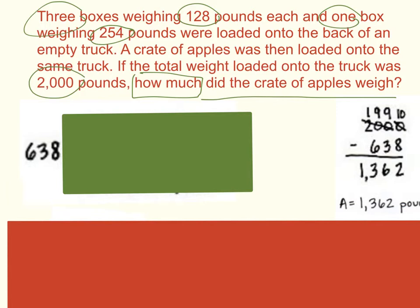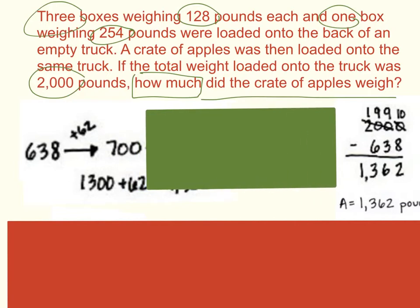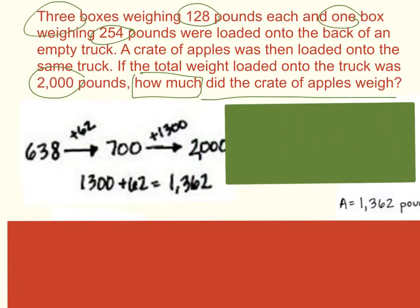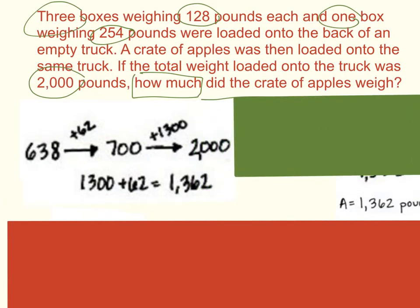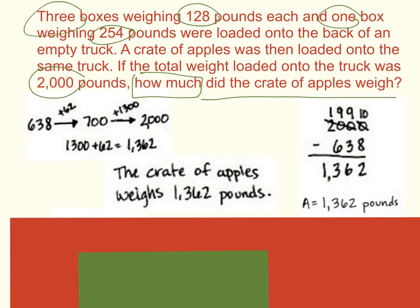A different way to look at this problem: 638 to 700 would be 62, then 700 to 2,000 would be 1,300, and 1,300 plus 62 would give me a total of 1,362. Remember to always restate your question. The crate of apples weighs 1,362 pounds.